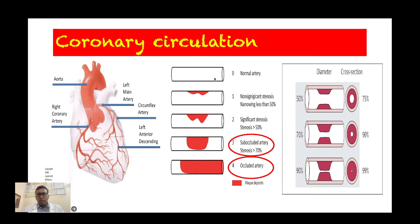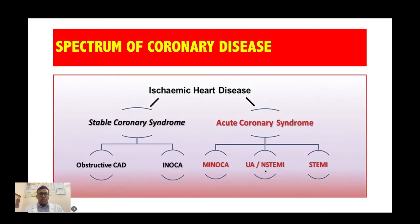In this diagram you can see blocks are there and one block is growing. When it reaches 70% or more we call it significant stenosis, which will need stenting. If it is totally occluded, we call it total occlusion and this artery should be opened as early as possible. The spectrum of coronary artery disease includes stable coronary artery disease and acute coronary syndrome — where circulation is abruptly disrupted, leading to either ST elevation MI (completely choked artery) or non-ST elevation MI (incomplete choking).